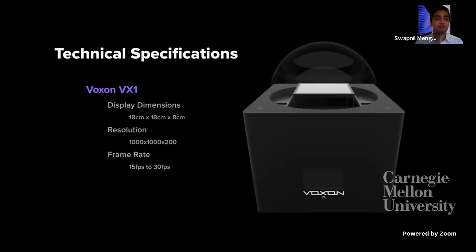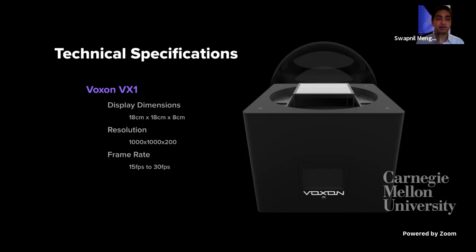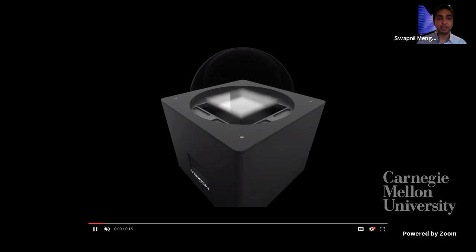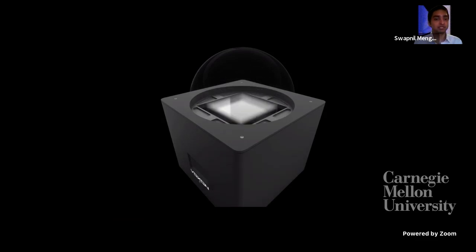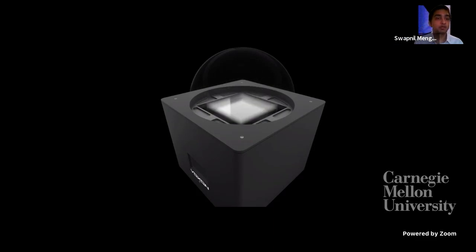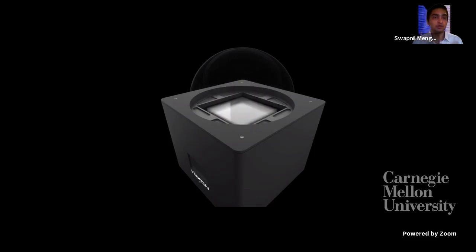A brief overview of the technical specifications: the display area is equivalent to the size of a two-pound birthday cake. The resolution is 1000 by 1000 by 200 voxels — equivalent to pixels but in three-dimensional space. The frame rate is variable, ranging from 30 to 15 fps. Volumetric images are created by projecting light on a screen that moves up and down at 4000 frames per second. Through persistence of vision, the human eye blends all the light together and perceives it as a true three-dimensional object.